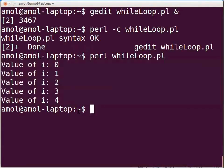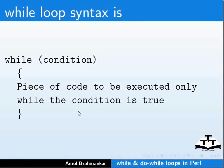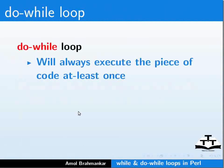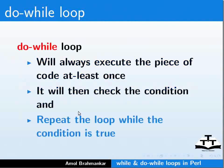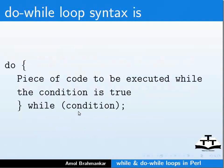Now let us look at do while loop. The do while statement will always execute the piece of code at least once. It will then check the condition and repeat the loop while the condition is true. The syntax is: do { piece of code to be executed } while (condition);